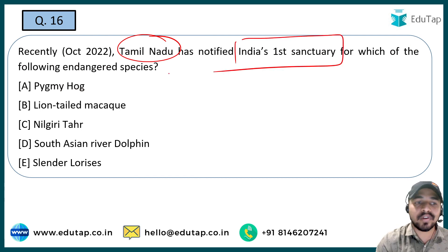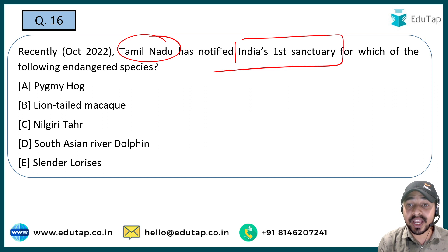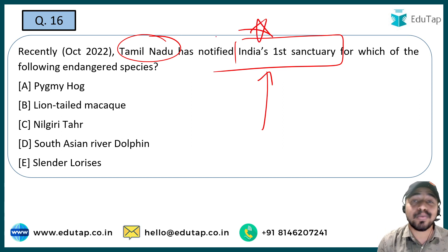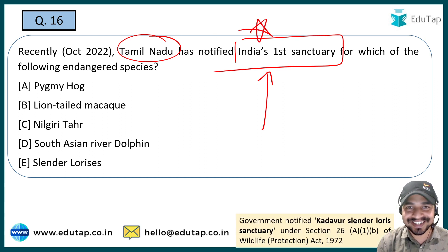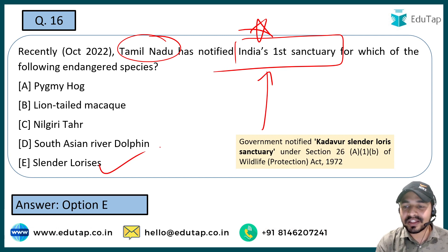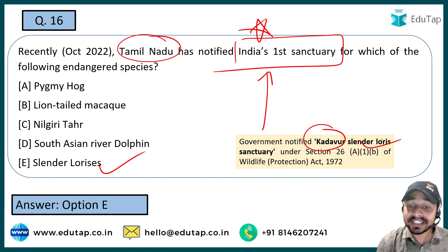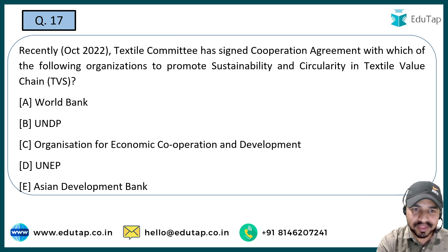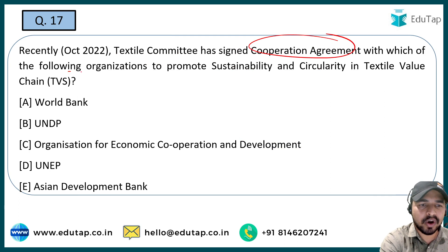The next question: Tamil Nadu recently notified India's first sanctuary for which of the following endangered species? This makes the question very important for the exam. The right answer is Slender Lorises — the Kadavur Slender Loris Sanctuary under Section 26 of the Wildlife Protection Act 1972 has been notified by the Tamil Nadu government.